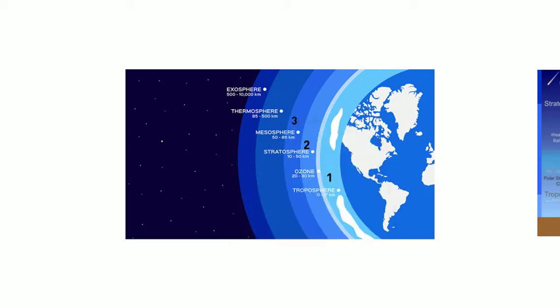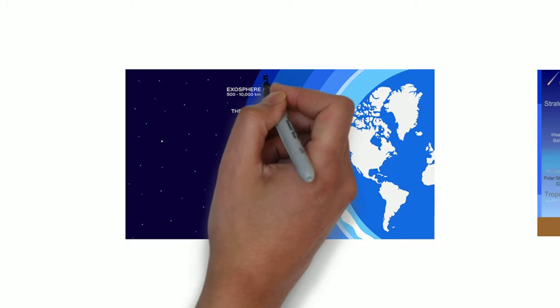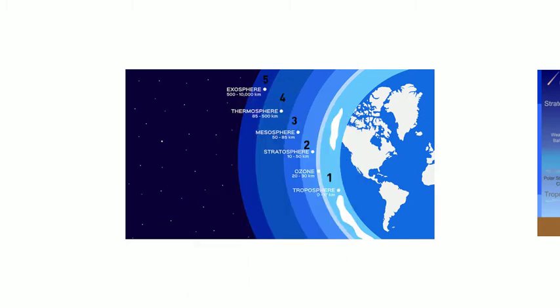3, the mesosphere at about 50 to 85 km above Earth, 4, the thermosphere at above 85 km, and 5, the exosphere at about 500 to 10,000 km above Earth.